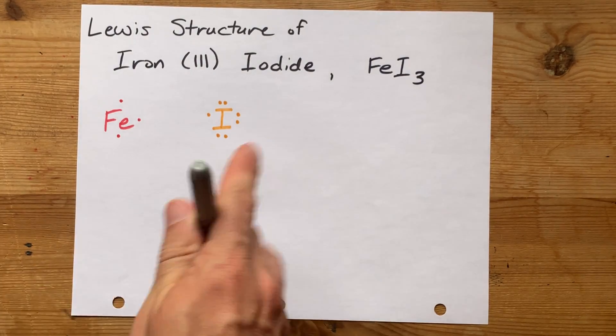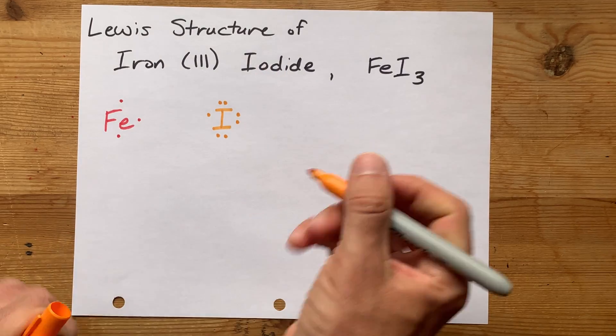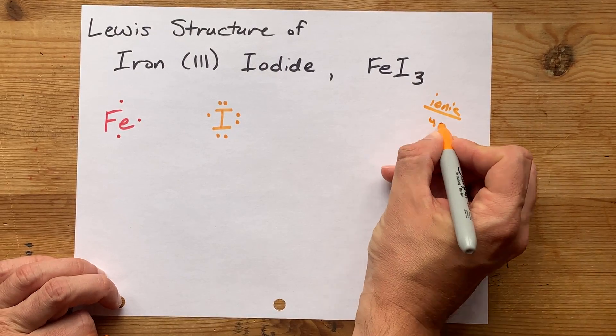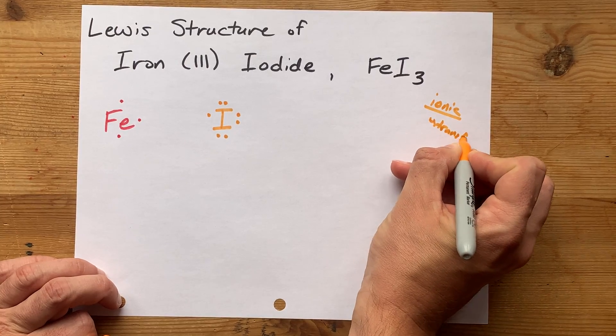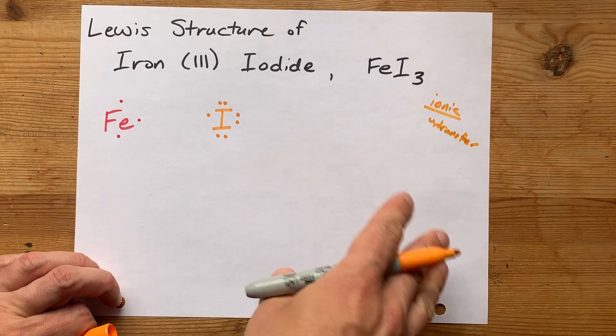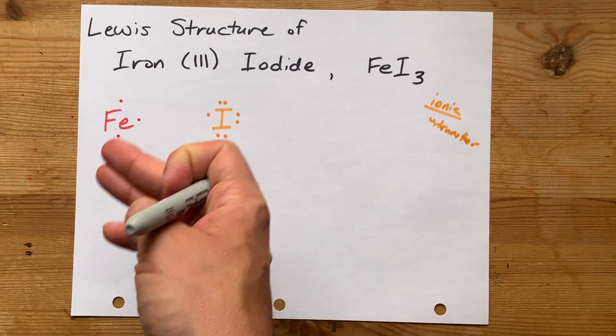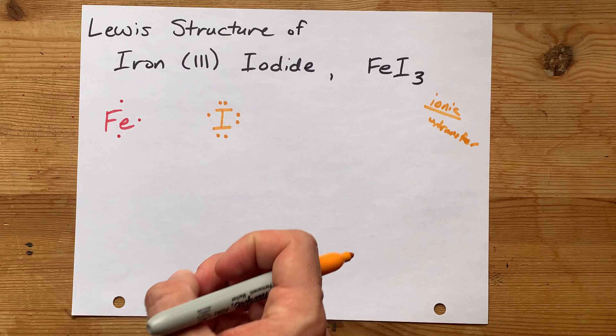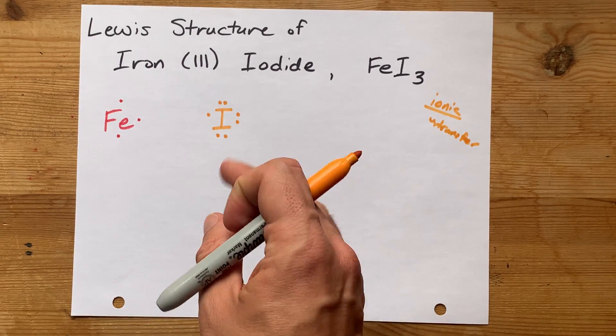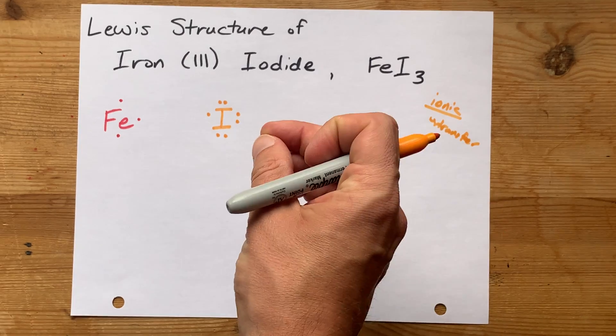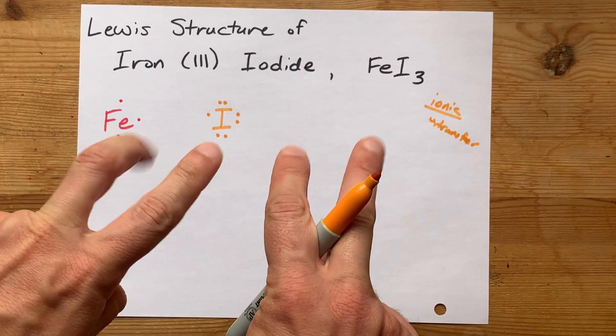This is an example of a metal reacting with a non-metal, which is what's going to make an ionic compound. That means there's going to be a transfer of electrons from the metal to the non-metal. The metals want to give away all of their valence electrons, and the non-metals want a complete or full outer shell, usually of 8 electrons. That's the octet rule.